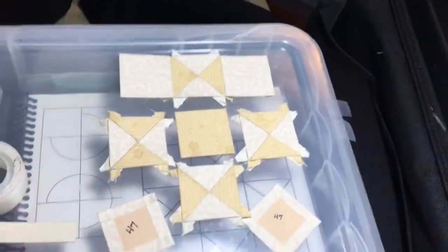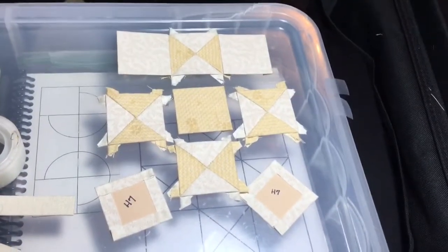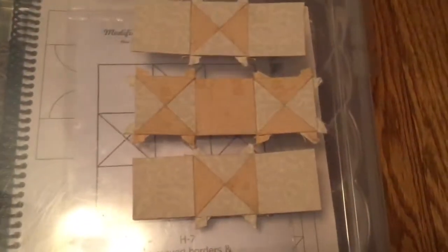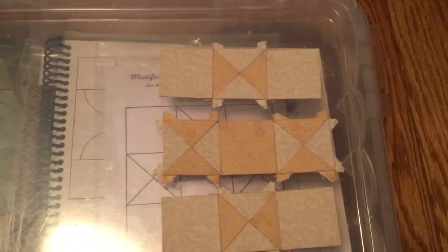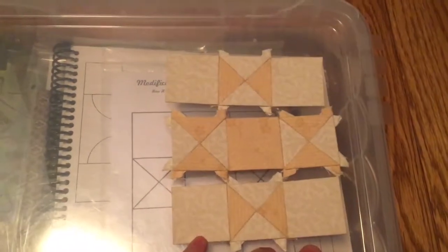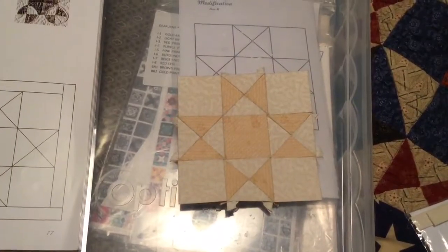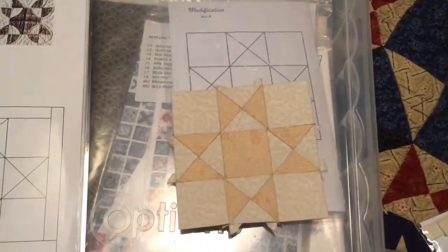Now I have three rows together and I'm just going to connect them and my block will be all done. Now my H7 block is all completed.